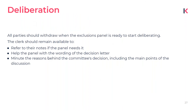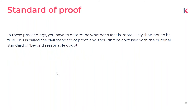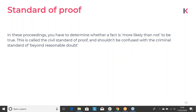Once you've heard all the parties and it's time to deliberate, everyone should withdraw from the panel except for the clerk. The clerk stays behind to help refer to notes, assist with the wording of any decision letter, and minute the reasons behind the committee's decision. The standard of proof in an exclusions hearing is that of being more likely than not — meaning it's 51% likely that the event happened and therefore supports the exclusion.